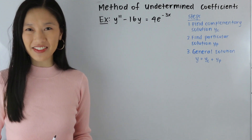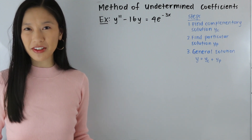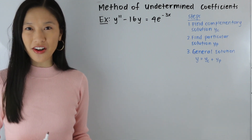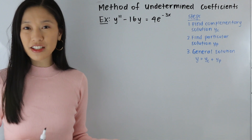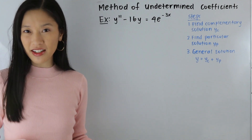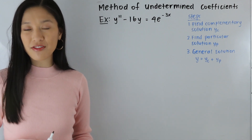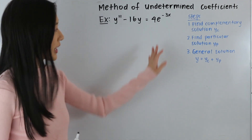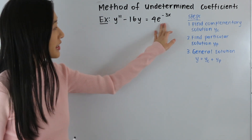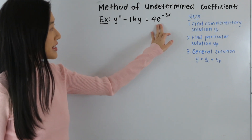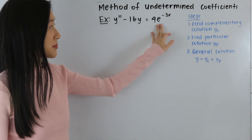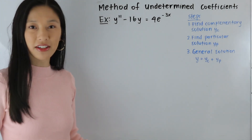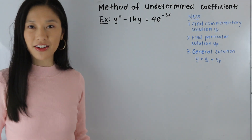Hey guys, Shanine here, and in today's video we are going to be learning how to solve a second order non-homogeneous differential equation using the method of undetermined coefficients when the right-hand side of the equation in standard form is equal to some exponential function. So let's go ahead and take a look at this example here.